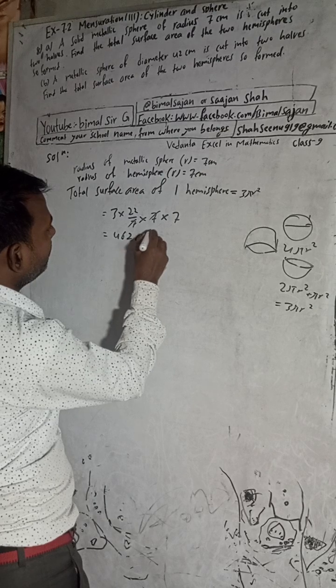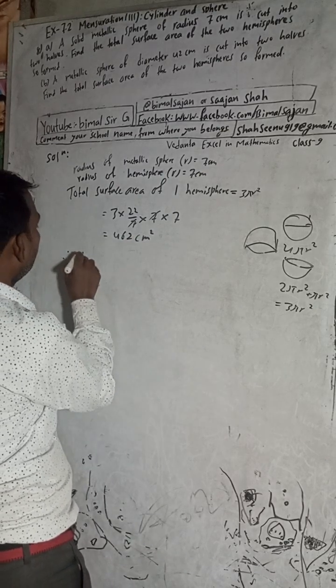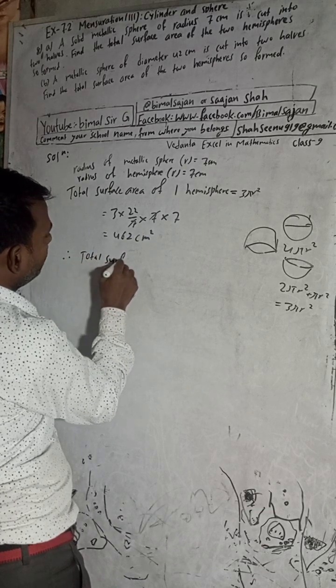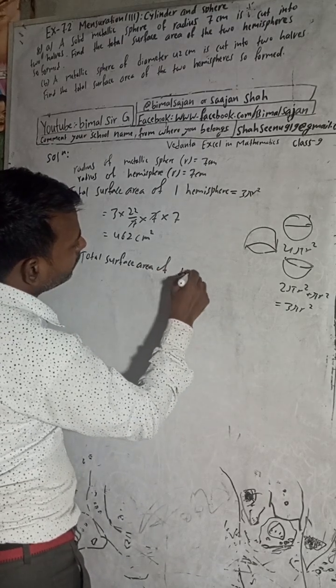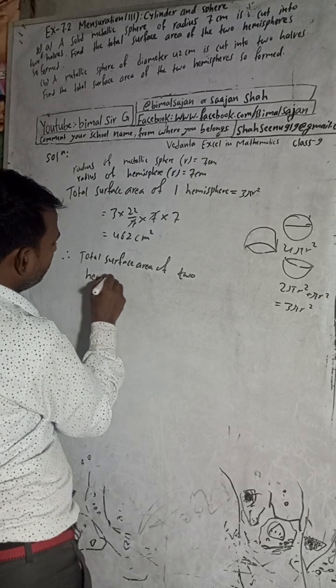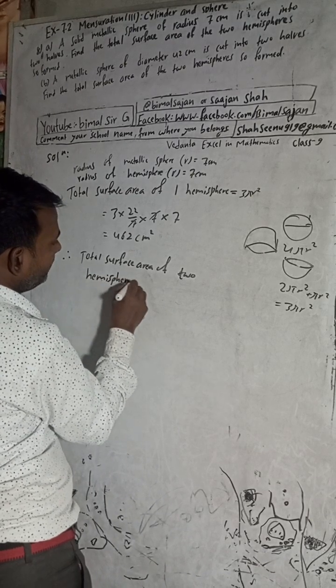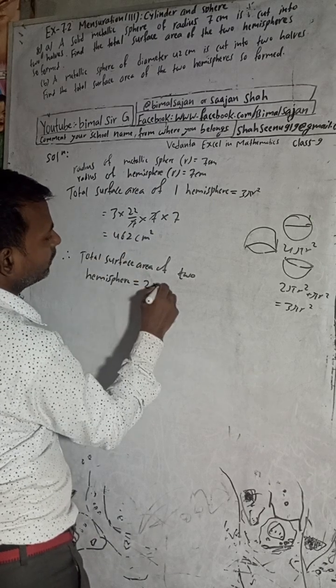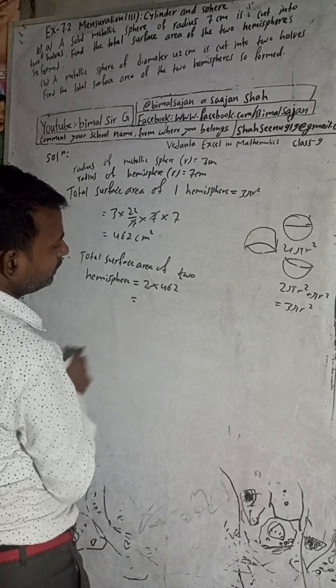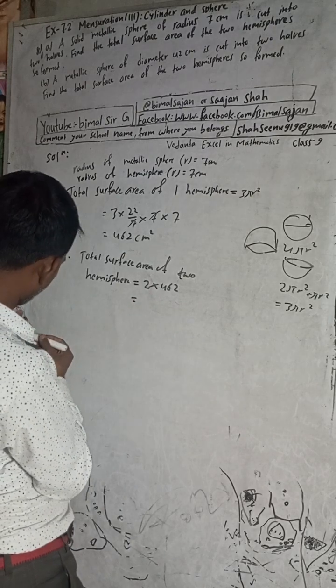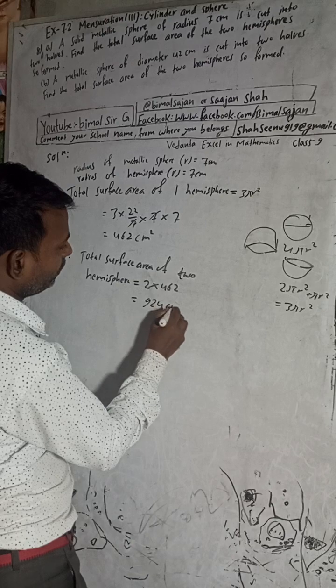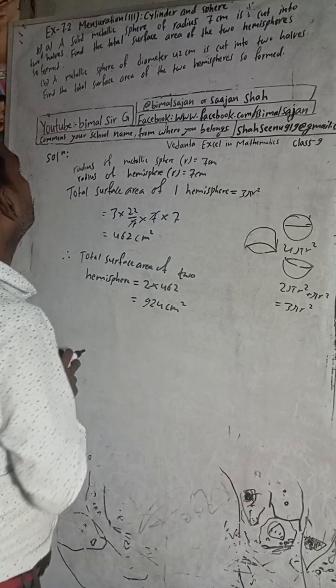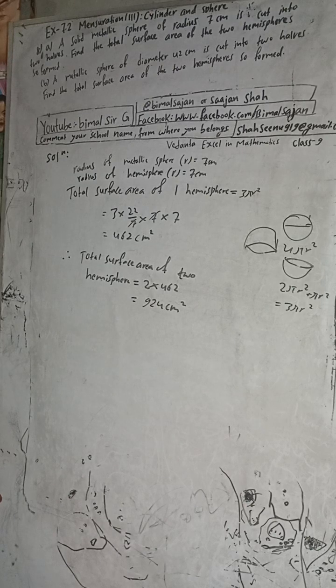Therefore, total surface area of two hemispheres is equal to 2 × 462 = 924 cm². So this is the solution of 8A.